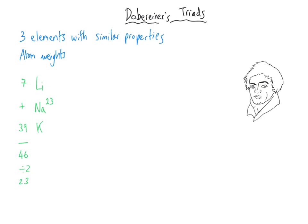Similarly, using calcium with an atomic weight of 40 and barium with an atomic weight of 137: adding those two together gives 177, and dividing by two gives 88.5. That's why Döbereiner put strontium in with calcium and barium, because strontium's atomic weight is 88. This worked quite well — lithium, sodium, and potassium are in the same group to this day with very similar chemical properties, and calcium, strontium, and barium work really well too.